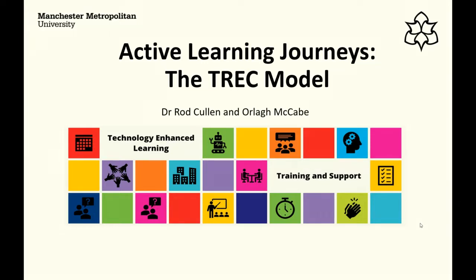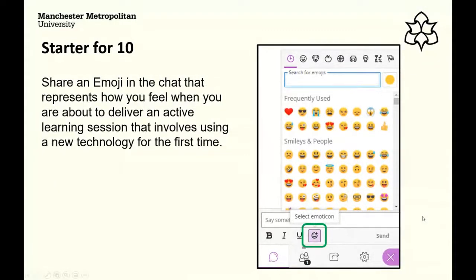I'm going to start with a little activity — a starter for ten. Make sure you've got the chat switched on. There's a slidey window on the right-hand side, and you'll see an emoji option there. I'd like you to very quickly share an emoji in the chat that represents how you feel when you're about to deliver an active learning session that involves using a new technology for the first time.